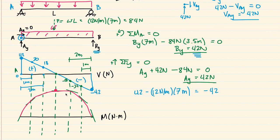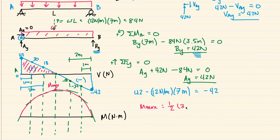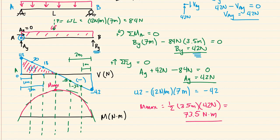The maximum moment occurs right at the middle of the beam. We can find M_max by taking the area under the shear diagram curve from point A to the midpoint. This area is a triangle: one-half times the base of 3.5 meters times the height of 42 newtons equals 73.5 newton meters. That is our shear and moment diagram for a simply supported beam with a uniformly distributed load.